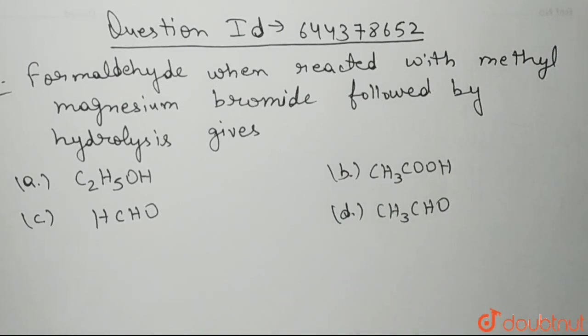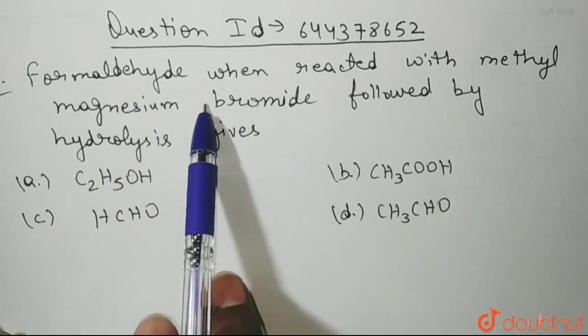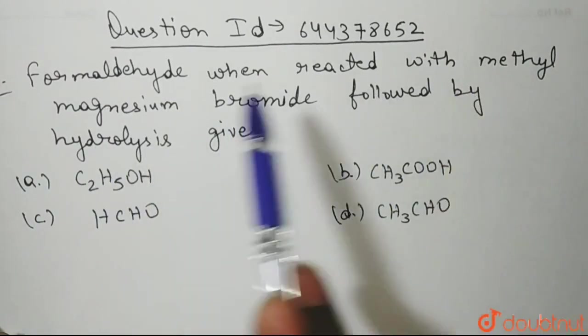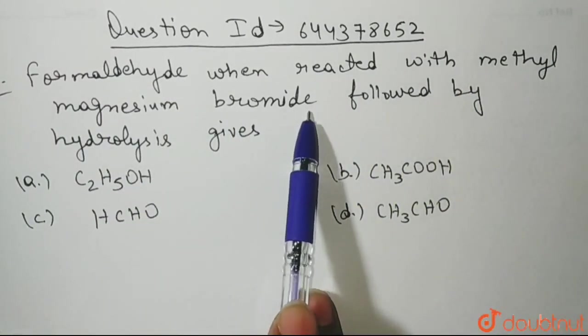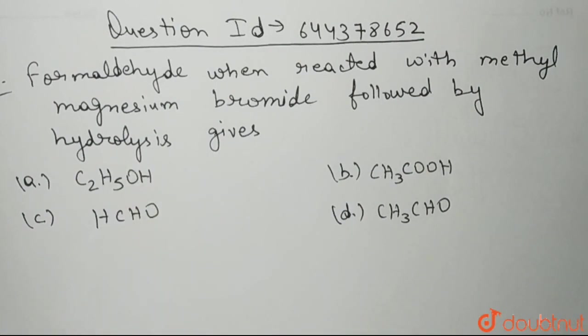In this question, we need to tell what will be the product formed when we react formaldehyde with methyl magnesium bromide, that is our Grignard reagent, which is followed by hydrolysis.